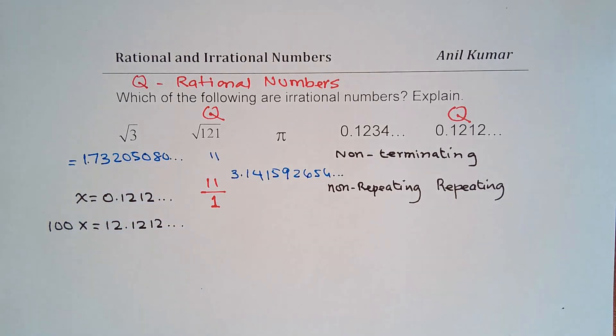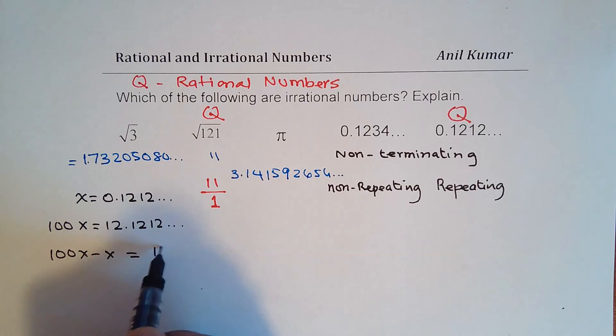Now if I do 100x minus x, that is, if I take away the value of x from 100x, I get the number 12 and all those repeating patterns disappear. It becomes 0. So what we get here is 12.0.